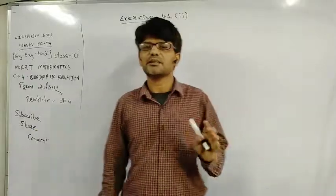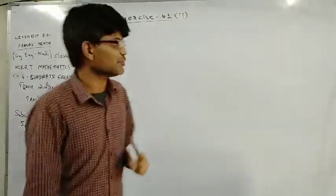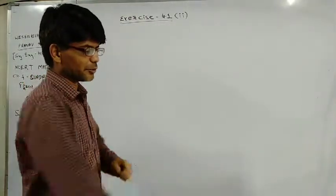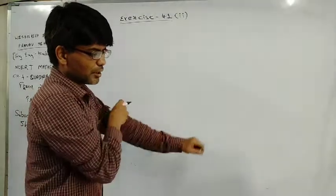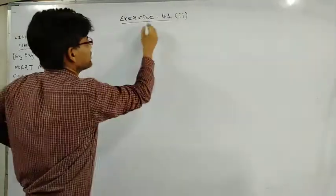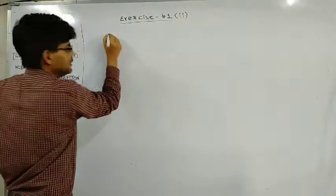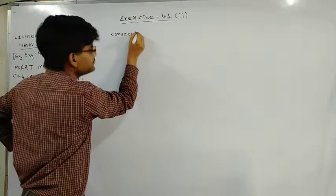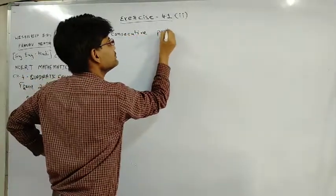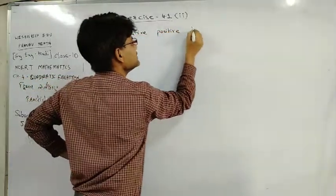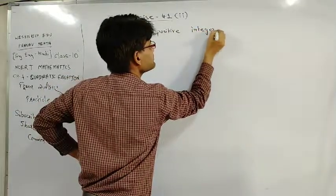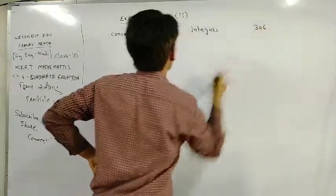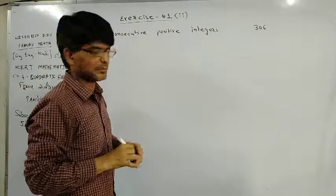If you don't like our video, please tell us in the comments so we can make our video better. Here, the second question is: the product of two consecutive positive integers is 306.